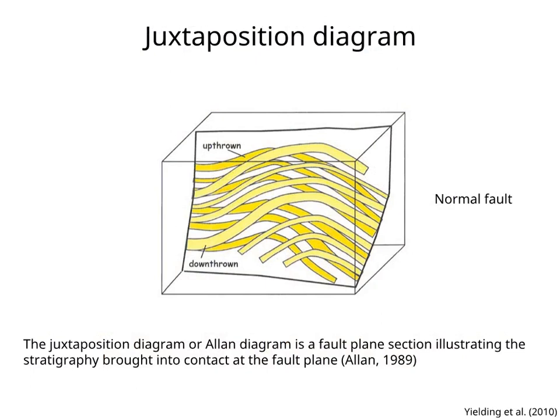An effective method to display juxtaposition of rocks across a fault is the Allen diagram. This is a fault plane section illustrating the stratigraphy brought into contact at the fault plane. In the figure, the light yellow layers are the reservoir units from the hanging wall in contact with the fault, and the dark yellow layers are the reservoir units from the footwall in contact with the fault. If fluids are migrating from the hanging wall block to the footwall block, they will migrate through locations where the reservoirs from these blocks are juxtaposed.